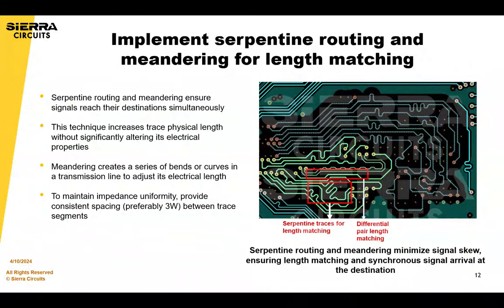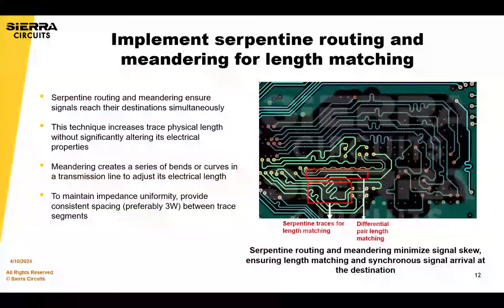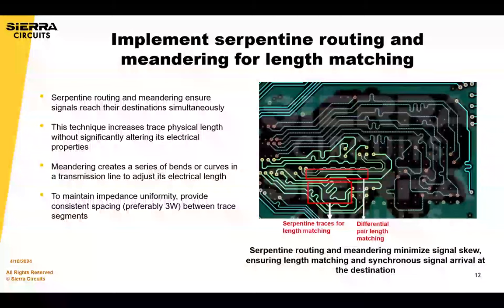To achieve impedance uniformity, consistent spacing between trace segments — preferably three times the trace width — is essential. This is not always possible with spacing restrictions, so do the best you can, but you want to try to achieve consistent propagation characteristics of your signal.